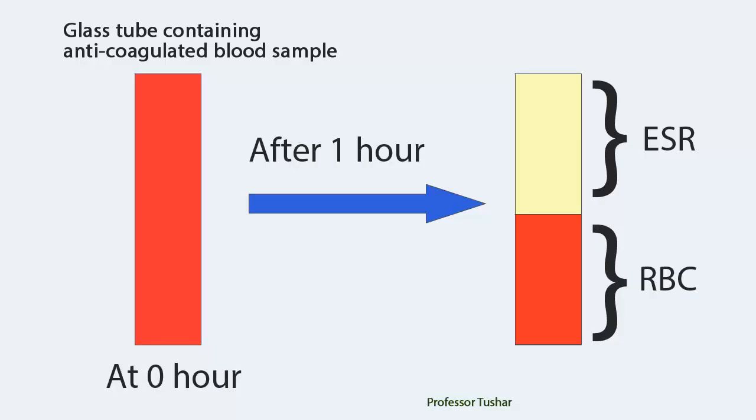In this method, blood is drawn into a special glass tube up to a specified height. The tube is stored vertically at room temperature for a specified duration. The distance between the top of the blood mixture and the top of the sedimentation of RBC is measured. The distance in mm indicates ESR.